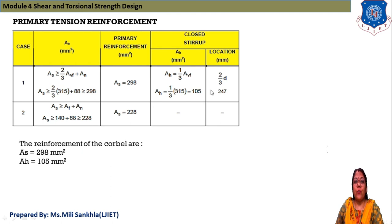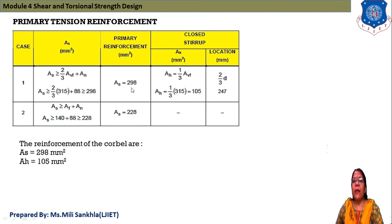Now calculate primary tension reinforcement for two cases. Case 1: AS = (2/3) × AVF + AN = (2/3) × 315 + 88 = 298 mm². Then AH = (1/3) × AVF = (1/3) × 315 = 105 mm², with stirrup location at 2/3 depth = 247 mm. Case 2: AS = AF + AN = 140 + 88 = 228 mm².